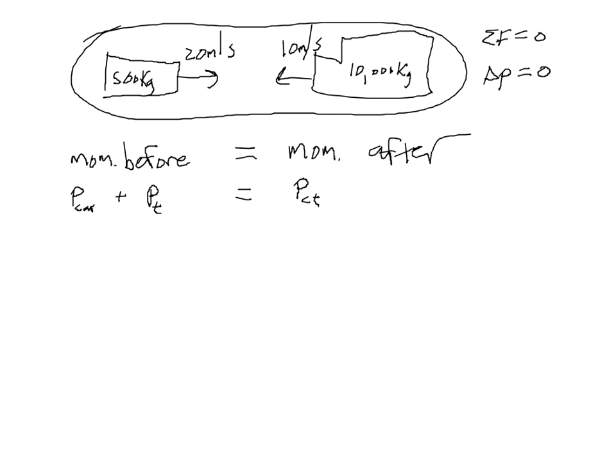Before the crash, the momentum of the car will be equal to the mass of the car times the velocity of the car. Before the crash, the momentum of the truck is the mass of the truck times the velocity of the truck. And we can put vector symbols here on all of these.